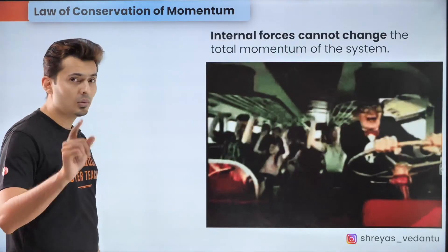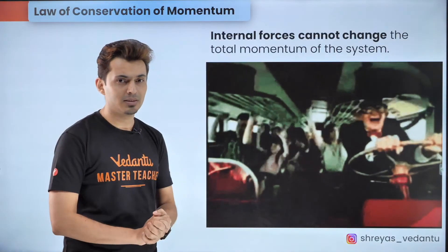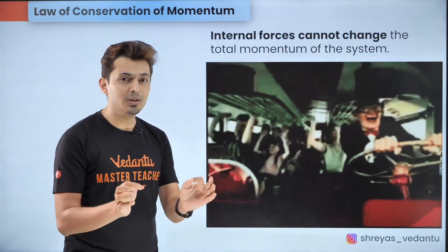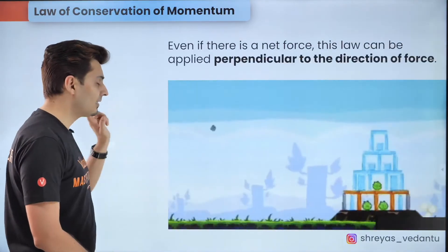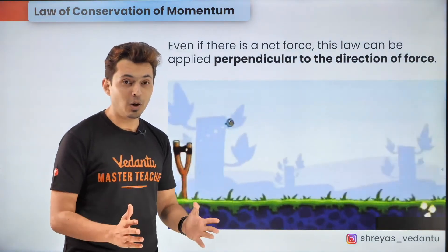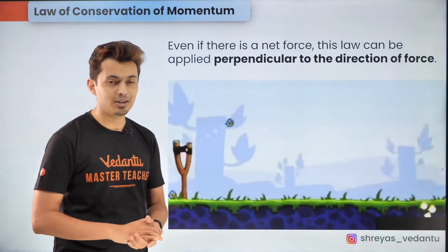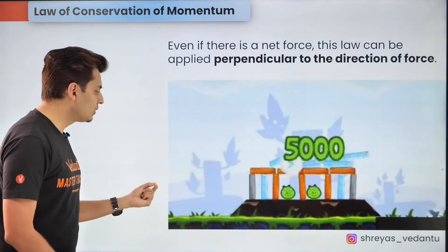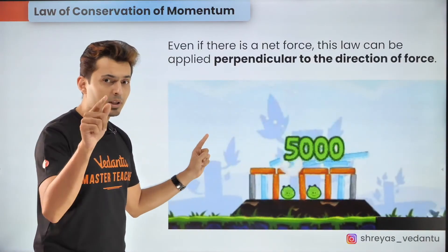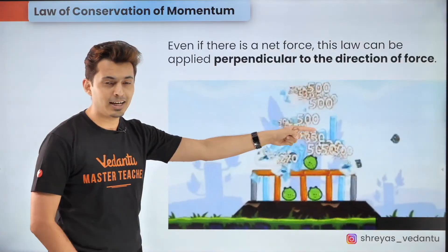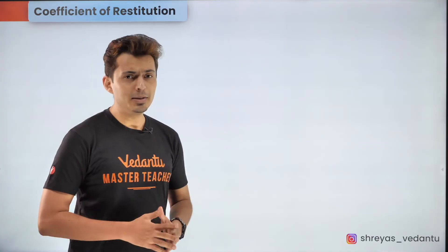It's also important to note that the internal forces cannot affect the total momentum of the system even though they might change the individual momentum of the particles. Now the interesting fact is that even when the net force is not zero you can use this principle in the perpendicular direction to conserve the momentum. For example when you shoot this bird and at the highest point the gravity is acting down but the momentum will be conserved in the horizontal direction which is perpendicular to the net force.